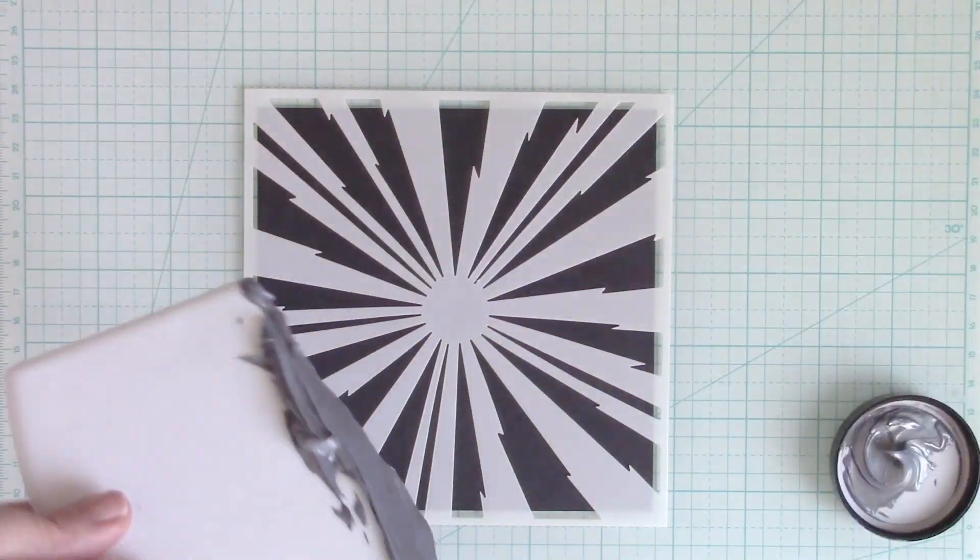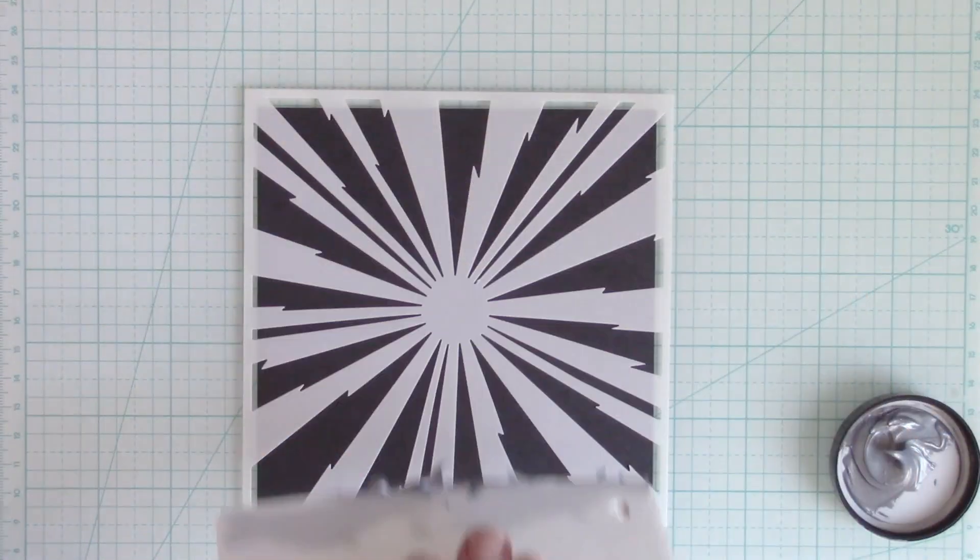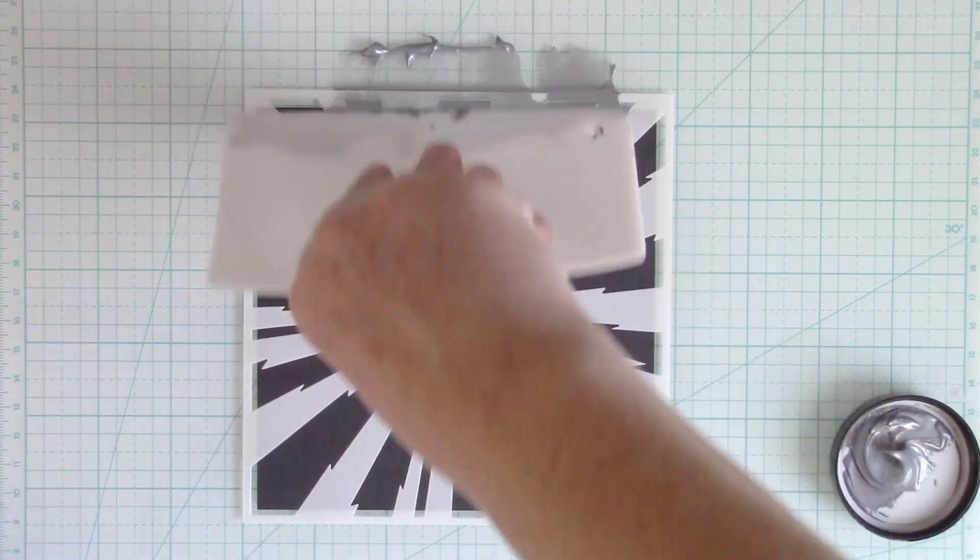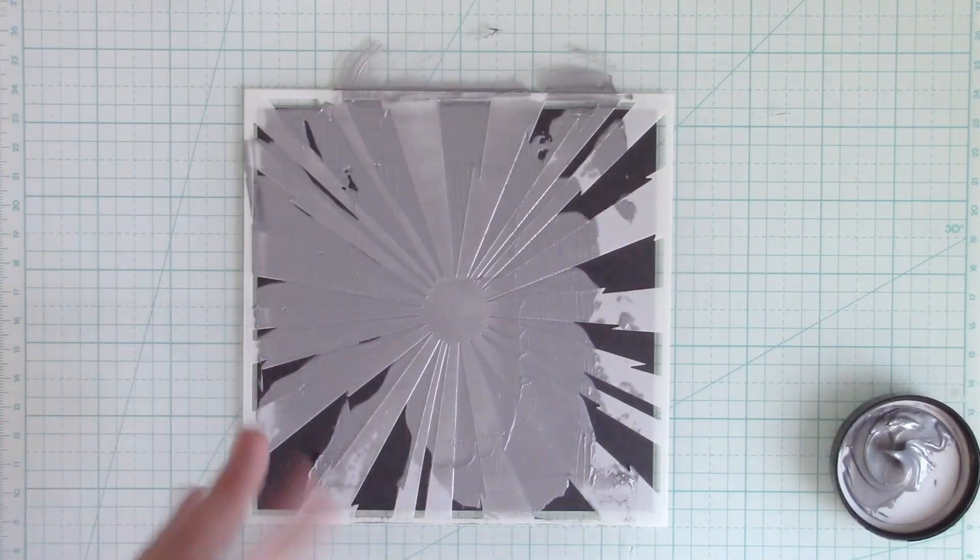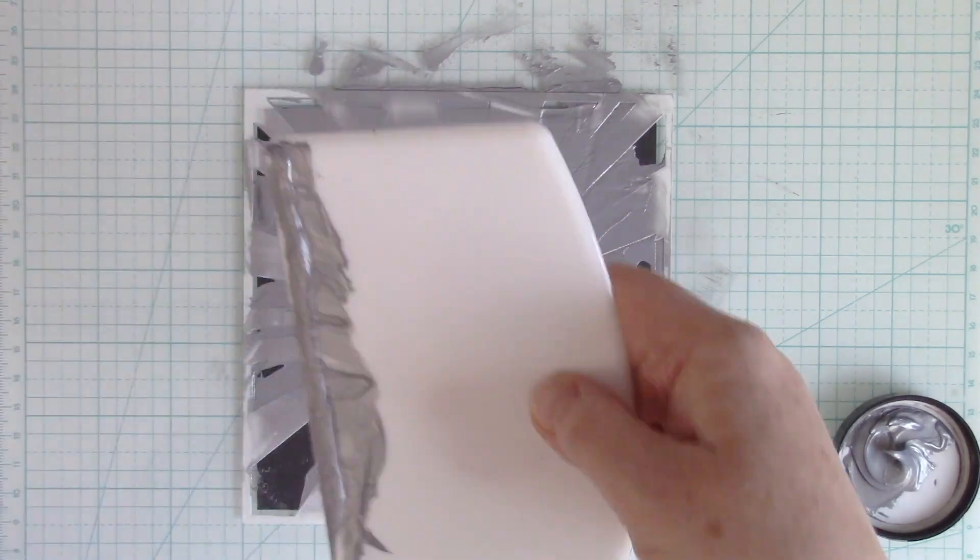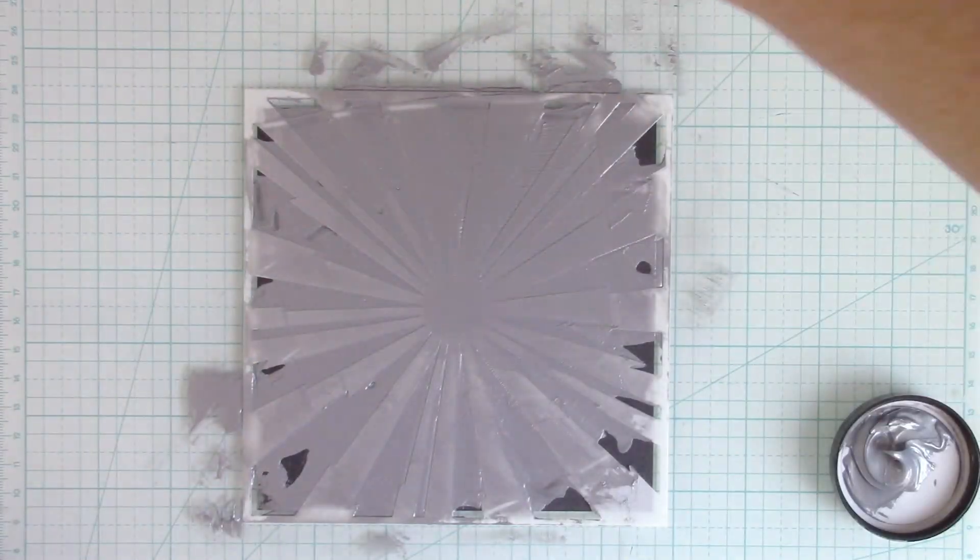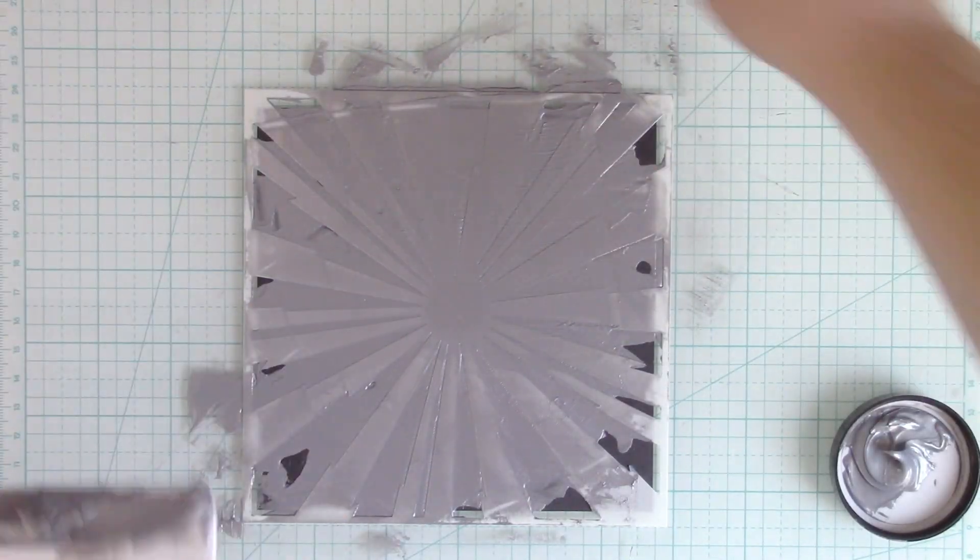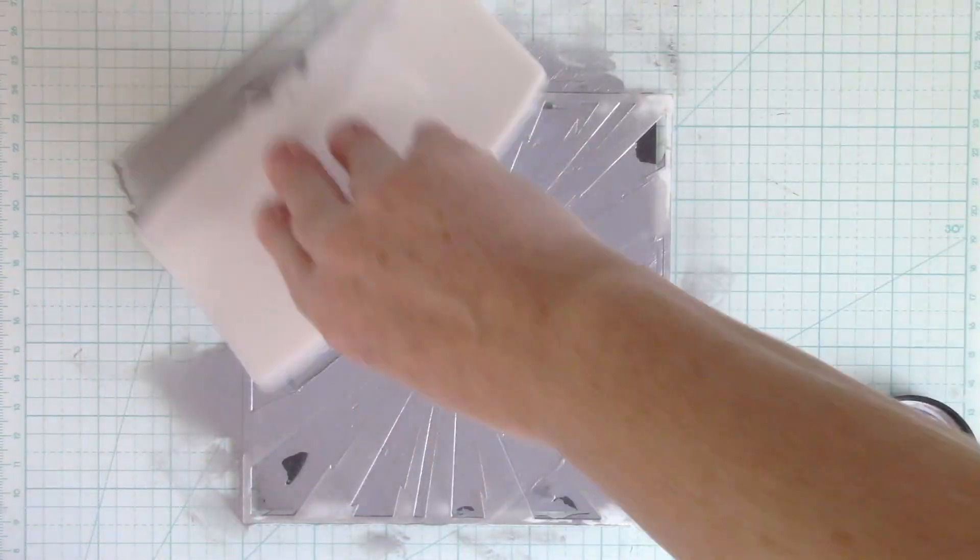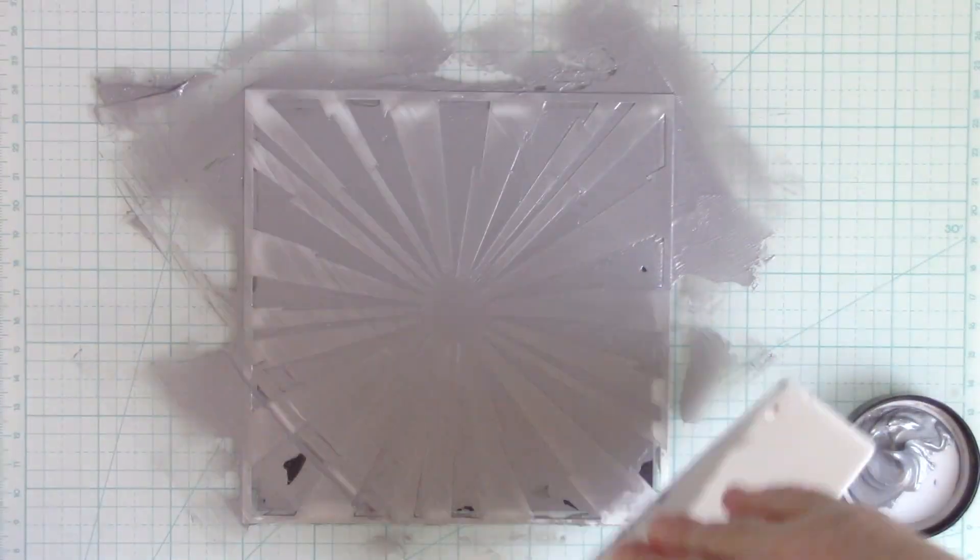This is the Deco Foil Metallix Gel in Glazed Pewter. I'm going to place a bunch of it, good sized globs, on the straight end of the Stencil Pal. The curved end is for your hand, and it makes it easy to position your hand around the Stencil Pal. I'm going to place it at about a 45 degree angle, and I'm just going to start working it across the stencil.